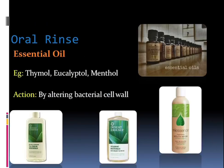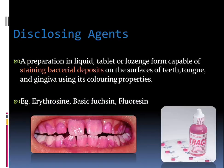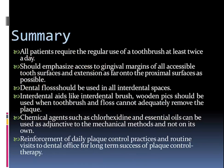Apart from this, there is one more disadvantage: if chlorhexidine is used for a very long duration, it may itself cause plaque formation because of accumulation of salts in the oral cavity. Talking about oral rinses or essential oils, they can be thymol, eucalyptol, and menthol; their action is by altering the bacterial cell wall. Talking about disclosing agents: a preparation in liquid, tablet, or lozenge form which is capable of staining bacterial deposits on the teeth, tongue, and gingiva — for example erythrosine, basic fuchsin, or fluorescein.